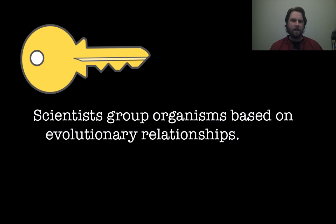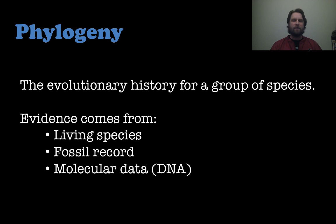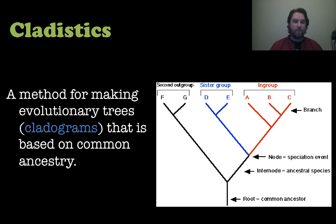Now for our second key concept: scientists group organisms together based on evolutionary relationships using the study of phylogeny — the evolutionary history of a group of species. Scientists compile evidence from living species, the fossil record, and molecular data including DNA, then create phylogenetic trees or cladograms.